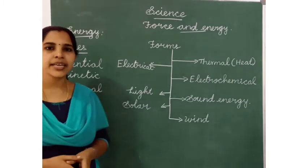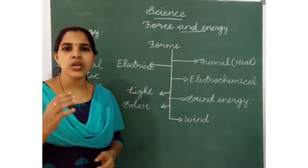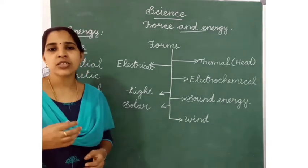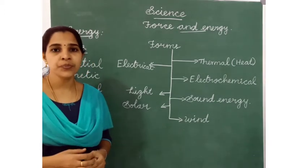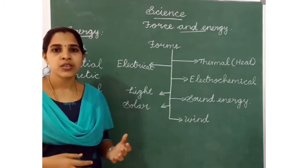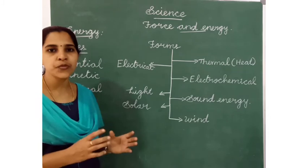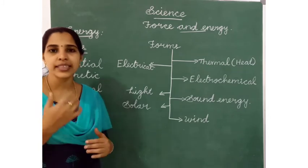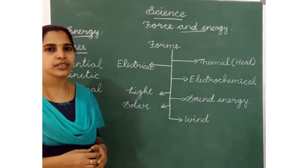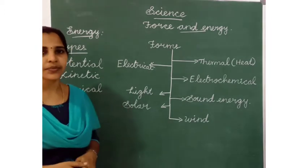And chemical energy. Chemical energy is stored in food. When we eat food, we get energy from it. The chemical energy is stored inside the food, and we get chemical energy from the food. So these are the three types of energy.